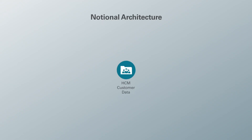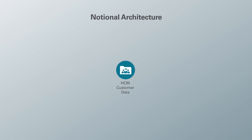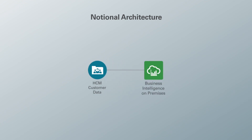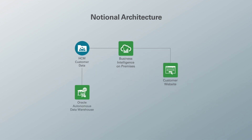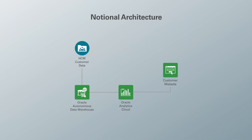To start with, the customer has their on-premise data and is using Oracle Business Intelligence to embed dashboards into their custom website. To start the migration, they first move their on-premise database into an autonomous data warehouse. Next, they migrate Oracle Business Intelligence over to Oracle Analytics Cloud. Then they are able to create new visualizations with the data visualization component and embed those into their custom website. Now that we have successfully migrated, we no longer need the on-premise business intelligence.